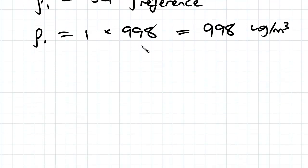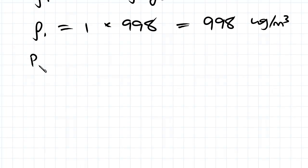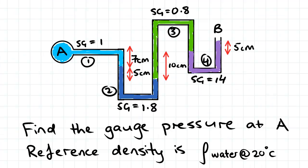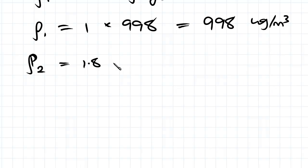And the same thing for ρ₂. Specific gravity for ρ₂ is 1.8 times 998, which equals 1,796.4 kilograms per meter cubed.